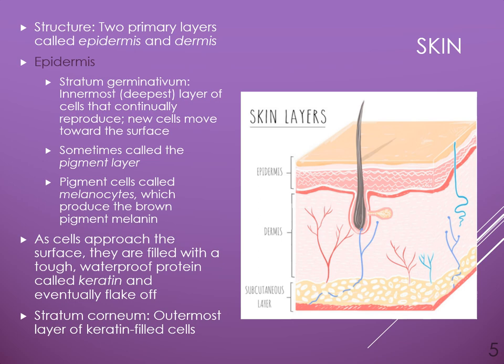The stratum germinativum is the deepest layer, and this is where new cells are born. I remember this by thinking of the word 'germinate,' which means to grow or to sprout. This is where epithelial cells undergo mitosis and then start the journey from that innermost layer up to the surface. Sometimes this layer is also referred to as the pigment layer because this is also where the melanocytes live.